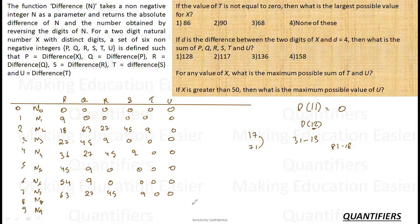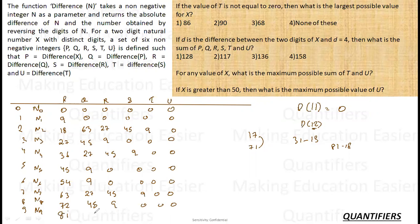For digit difference 8, p = 72. After 72, the series is 27, 45, then 9, then 0, 0, 0. For digit difference 9, p = 81. Then 81 minus 18 = 63, then 27, 45, 9, and 0.